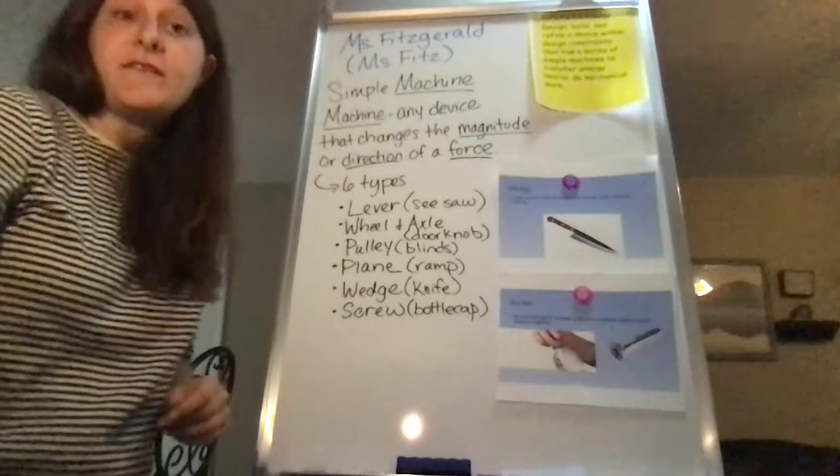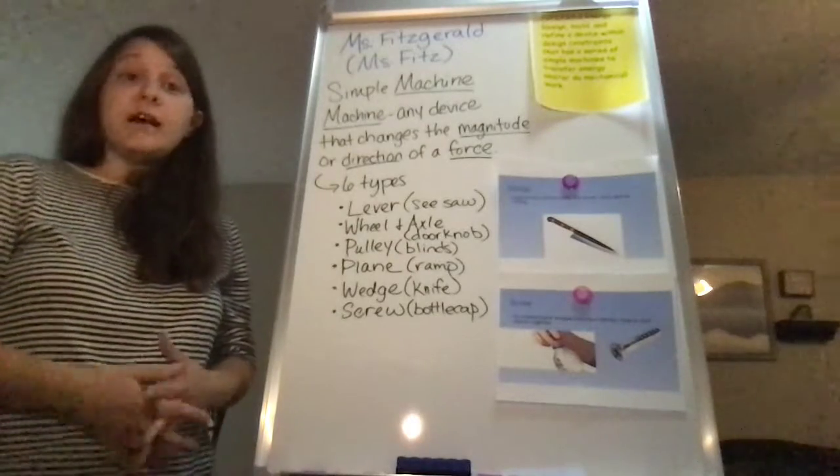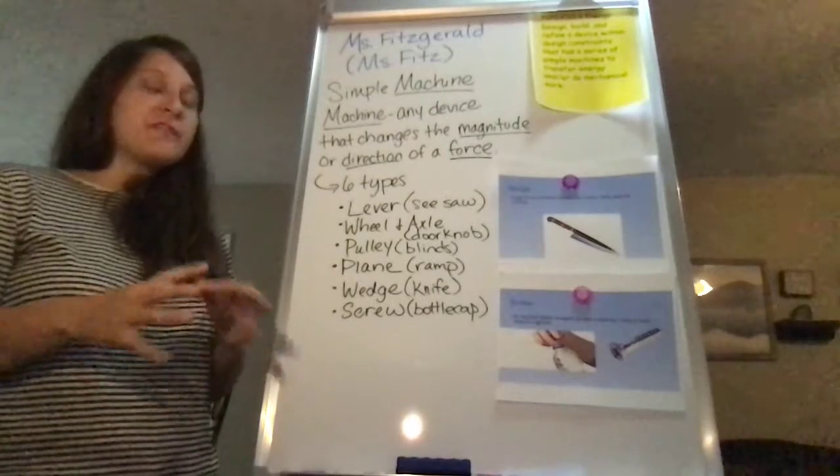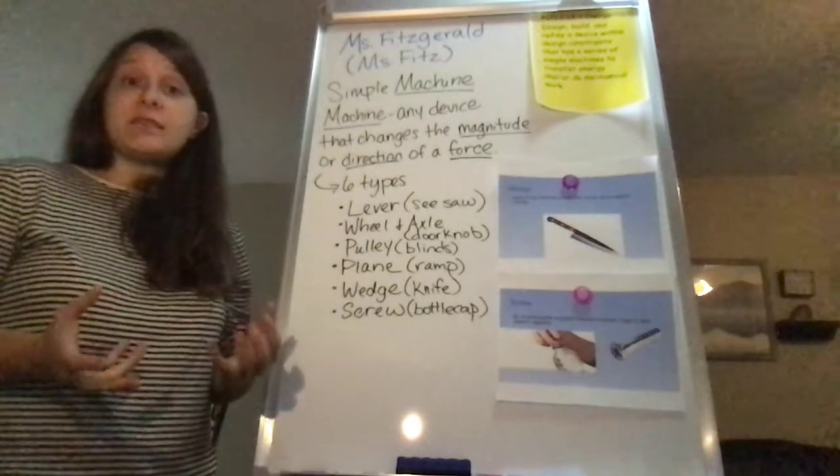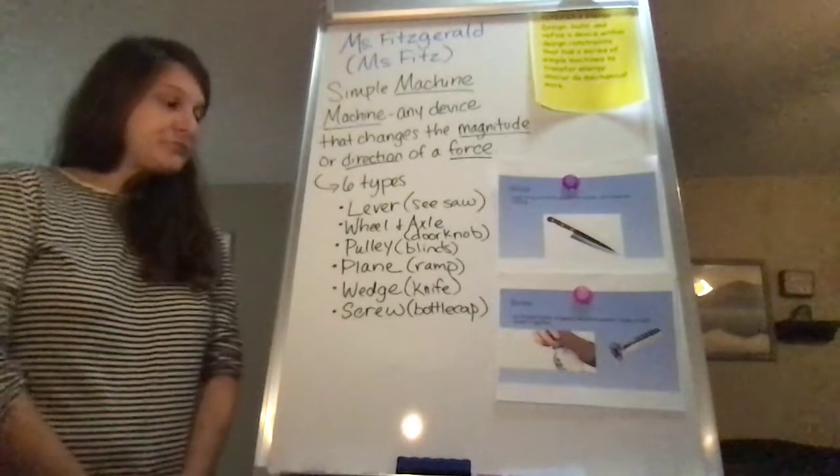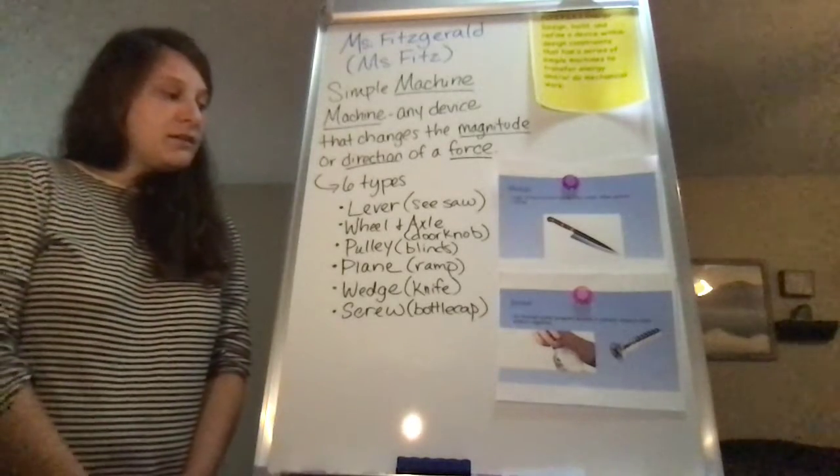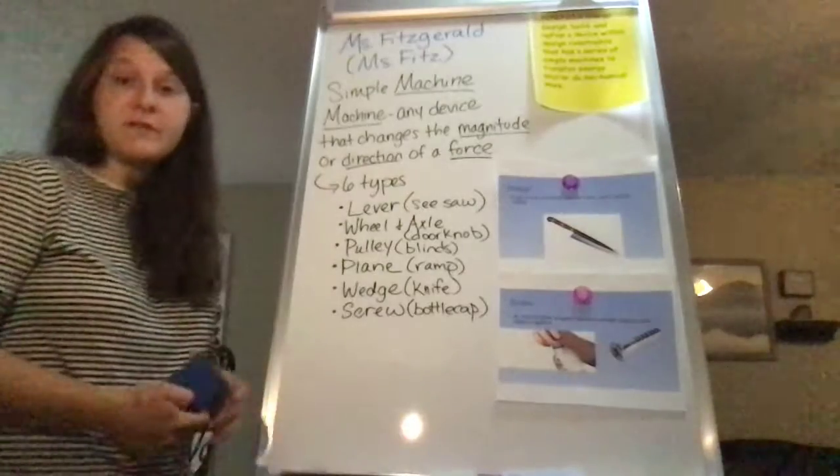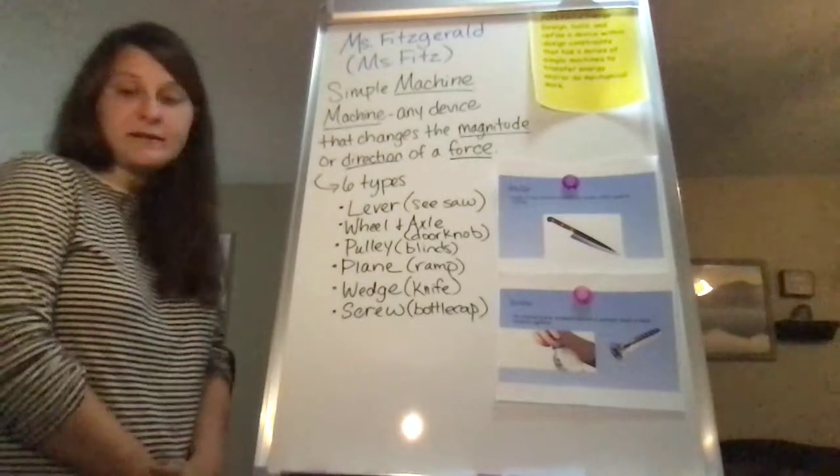Okay, so now that you know what the six types of simple machines are, I want you to spend five minutes, look somewhere in your house for something that you believe is a simple machine. And when you come back, we'll discuss and we'll see if you are correct.